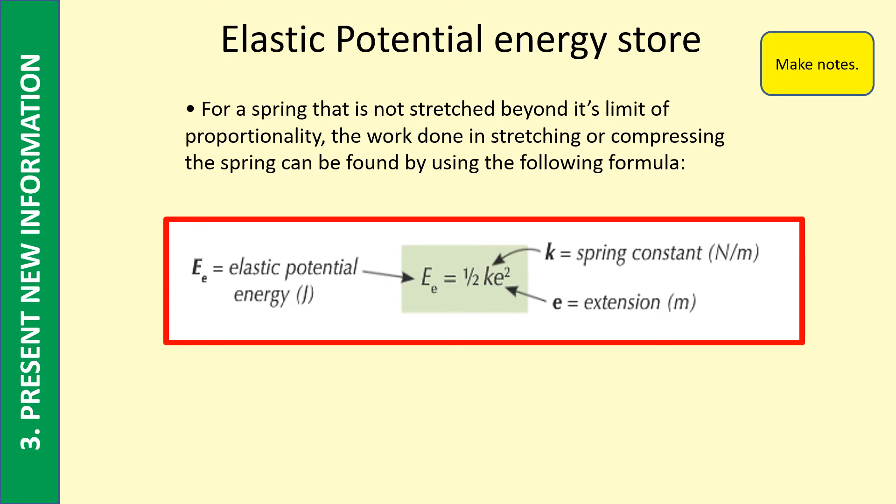And then it's a half k is the spring constant, which you now know is different for every spring, and e is the extension squared. So the units are energy in joules, the spring constant in newtons per meter, and the extension in meters. When you're doing questions, if you're given an extension in centimeters, make sure you convert it to meters.